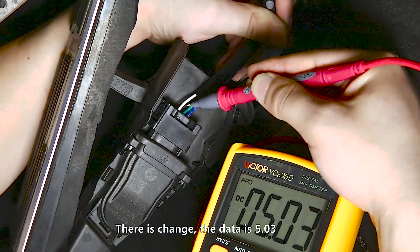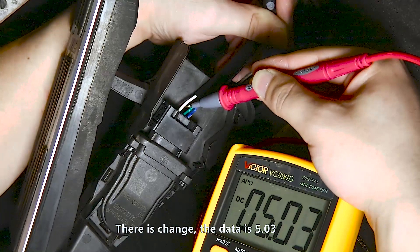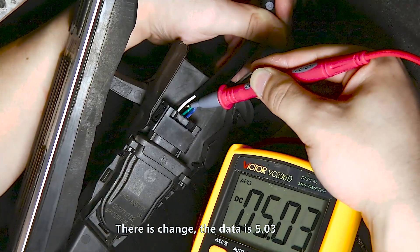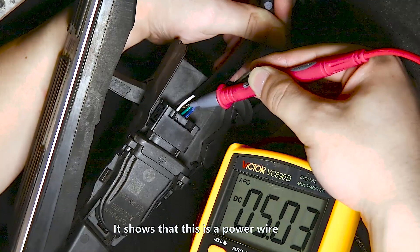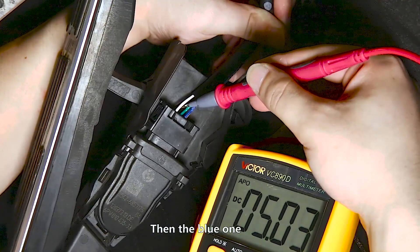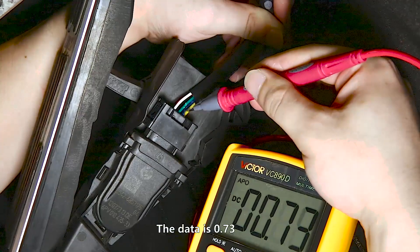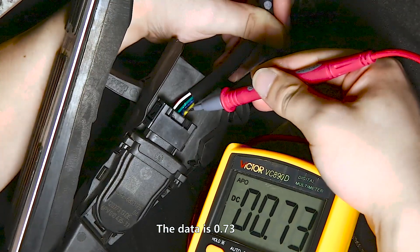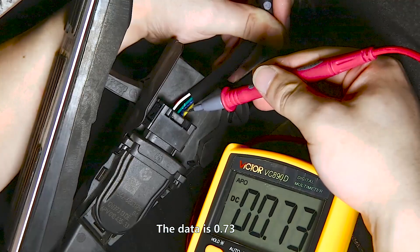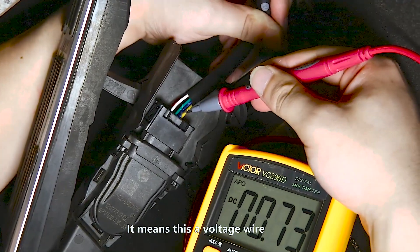There is a change. The data is 5.03. It shows that this is a power wire. Then the blue one. The data is 0.73. It means this is a voltage wire.